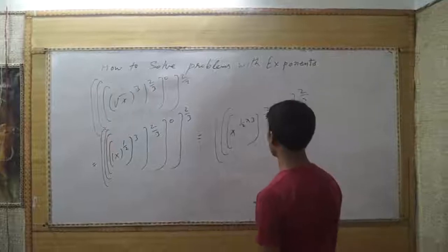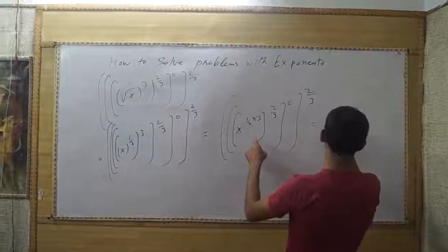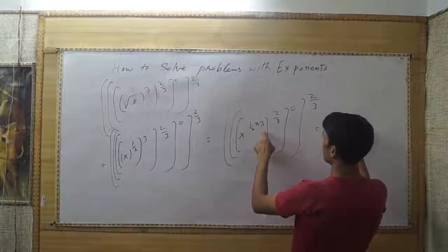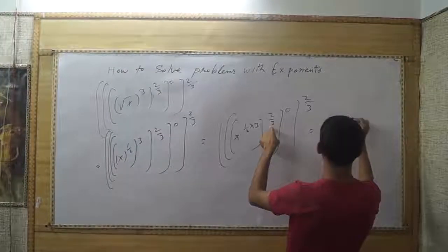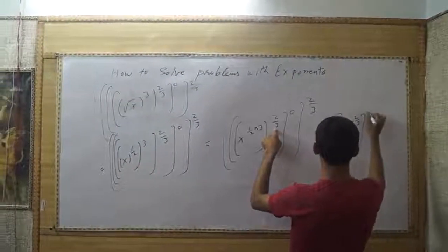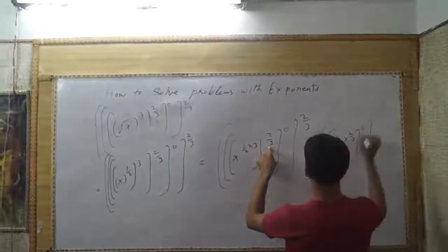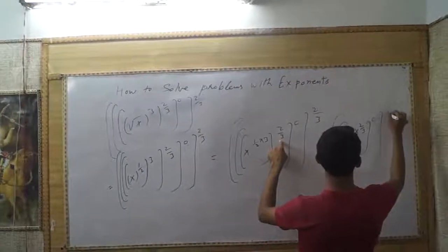Now, we simplify this x power 3 divided by 2. We multiply this 2 divided by 3. And x power 0. And x power 2 divided by 3.